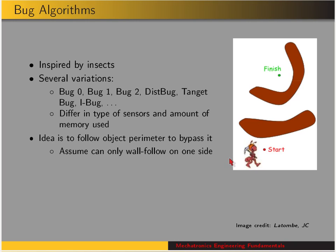Bug algorithms are inspired by insects, and there are several variations such as bug zero, bug one, bug two, dist bug, tangent bug, and iBug. These variations differ in the types of sensors and the amount of memory used. They all have the same general idea, which is to follow an object's perimeter in order to bypass it — so you do wall following. The robot hugs the wall and goes around the perimeter of the object.